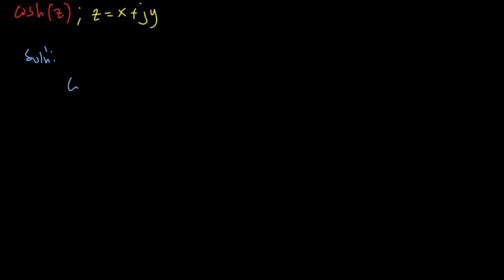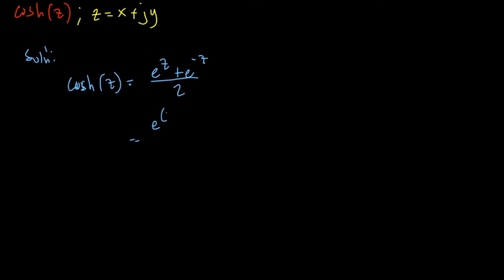So our hyperbolic cosine of Z is equal to E to the Z plus E to the negative Z, all over 2. Then our Z is equal to X plus J of Y, so we need to substitute that: E to the X plus J of Y plus E to the negative X plus J of Y, all over 2.